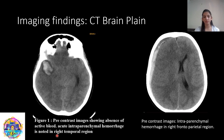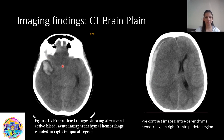On getting CT brain plain done, we could see intraparenchymal hemorrhage in the right temporal region which was resulting in mass effect and midline shift to the left side. There was a subdural hematoma in the right frontoparietal region. Also, there were few streaks of subarachnoid hemorrhage in the right frontal temporal region. Given that there was no history of trauma, the patient was advised CT angiography to rule out any aneurysm.